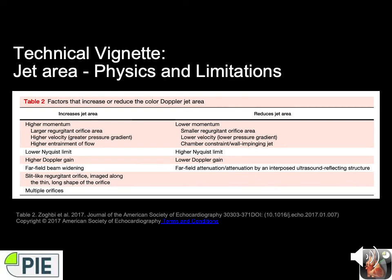In summary regarding jet area physics and limitations: there is poor correlation between jet area and MR severity due to technical and hemodynamic factors including increased left atrial pressure, left atrial size, and underestimation of eccentric jets.